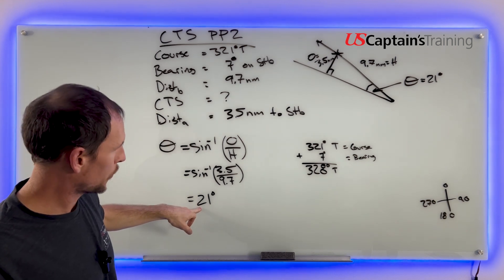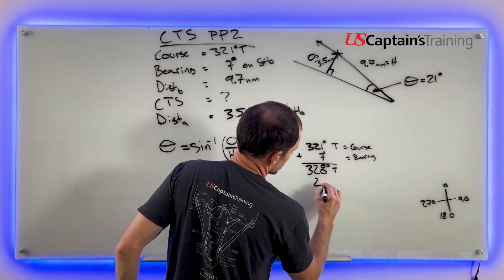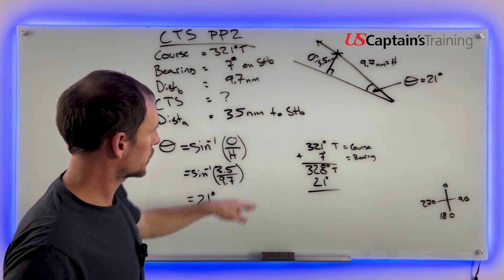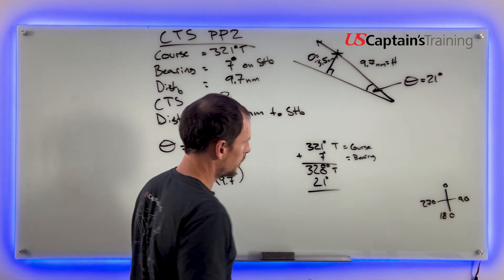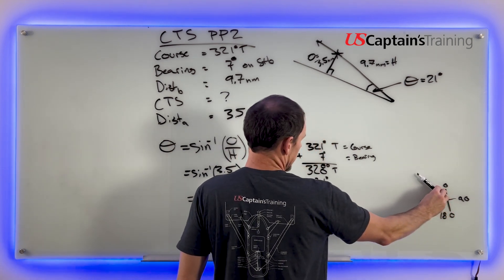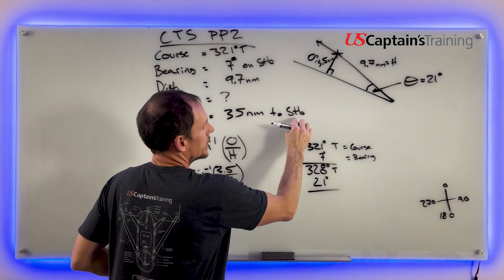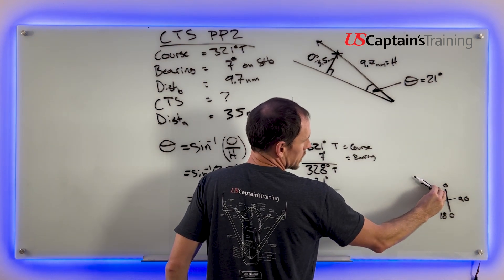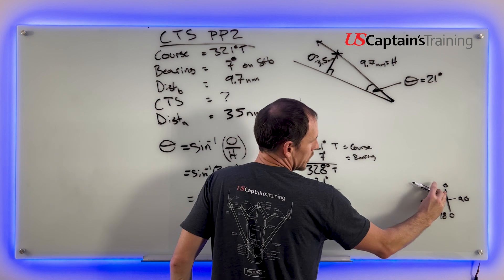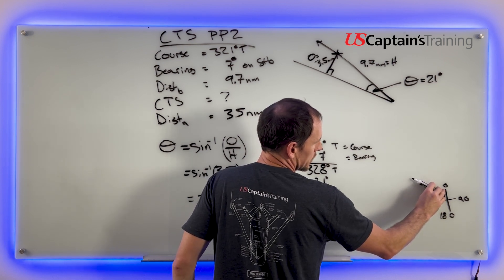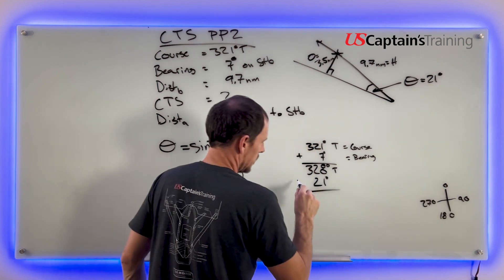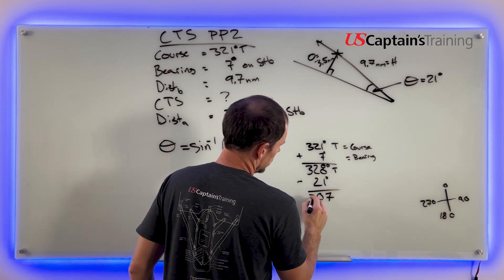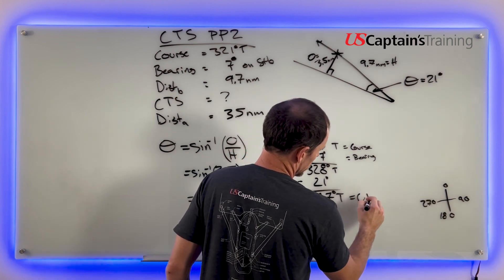Now we need to correct for the course, 21 degrees. We're going to either add or subtract this. We need to leave this thing 21 degrees. We already took the 7 for the bearing. We need to correct 21 degrees. We need to leave it to starboard. If we're here at 328 and we need to leave that thing 21 degrees to starboard, we're going to have to go down so we leave it on our starboard side. So we subtract. 328 minus 21 equals 307 degrees true, our course to steer.